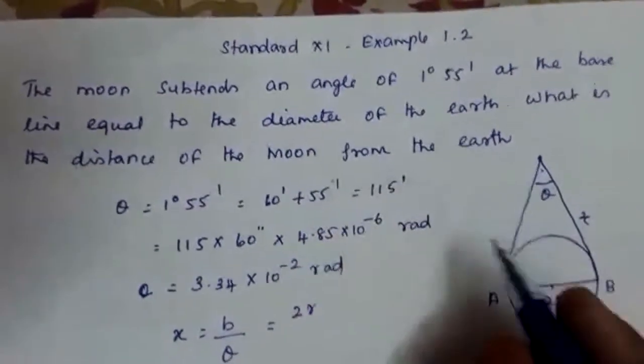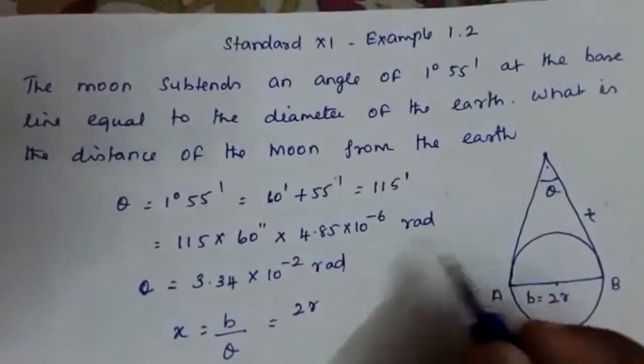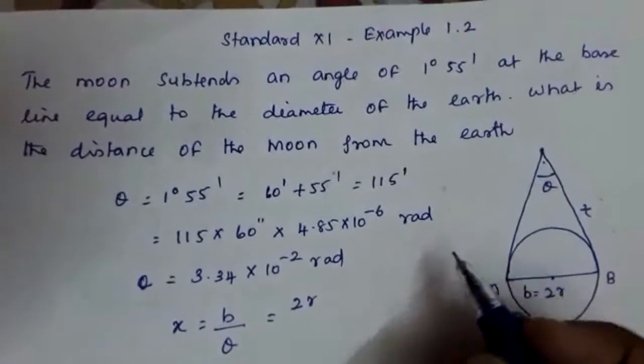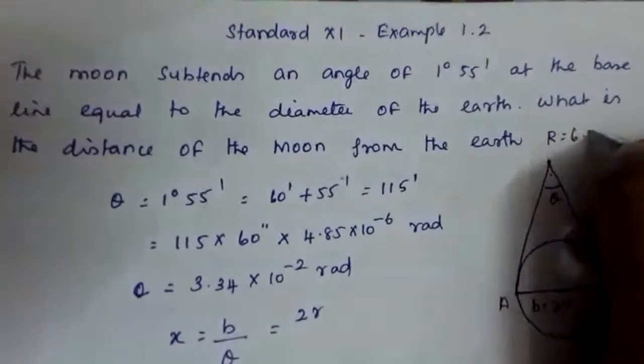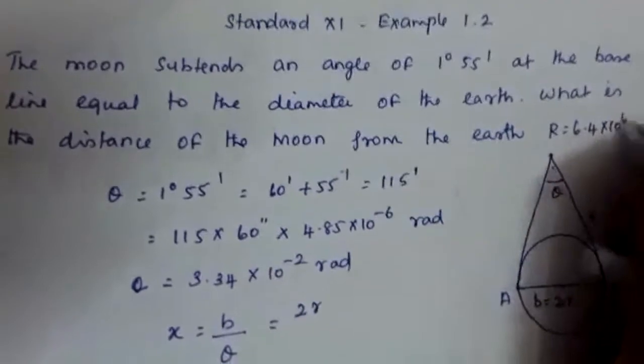Now according to the problem, the radius of the earth, we have to know the radius of the earth. The problem itself gives the radius of the earth is equal to 6.4 into 10 raised to 6 meter.